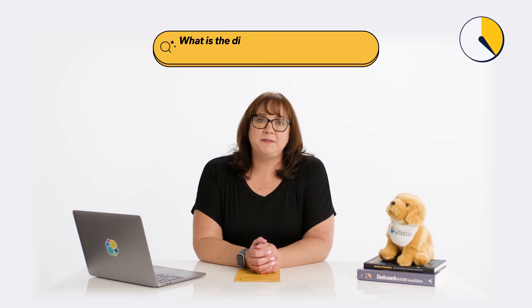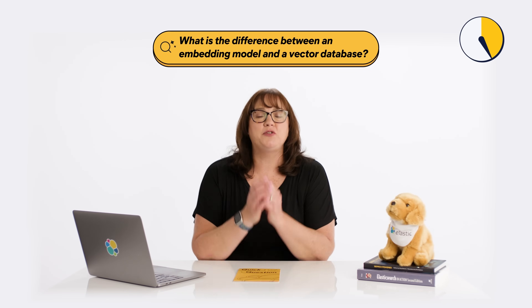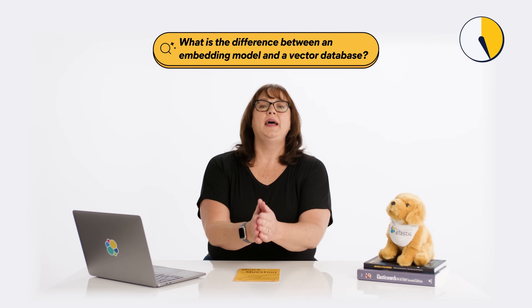What is the difference between an embedding model and a vector database? An embedding model is what translates content into vectors, and vectors are numerical representations of that data. You can think of them as an array of floating point numbers. These vectors are stored, indexed, and searched using a vector database.